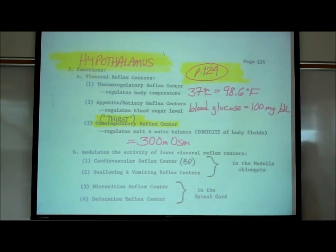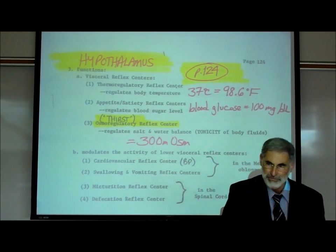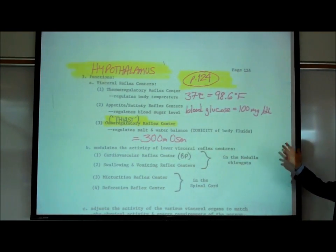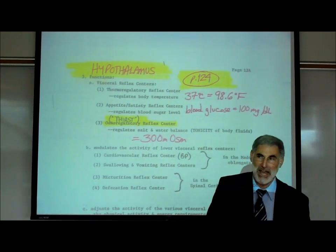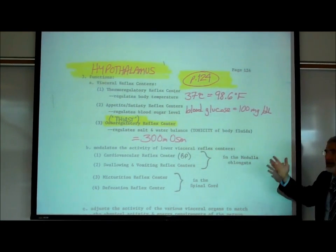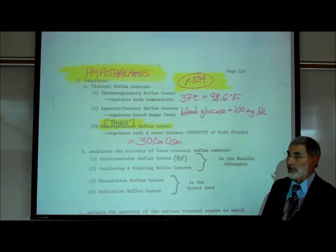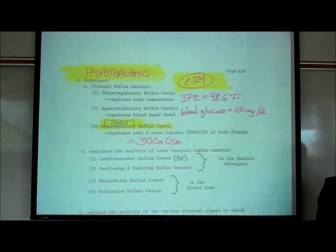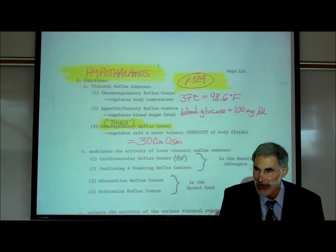Also in the hypothalamus is a control center that regulates our blood sugar level. The normal blood sugar level is about 100 milligrams of glucose per deciliter of blood. It doesn't matter if I say 100 milligrams of glucose per deciliter or per 100 milliliters — 100 milliliters is the same as a tenth of a liter or deciliter. You'll need to know what a normal blood sugar level is.